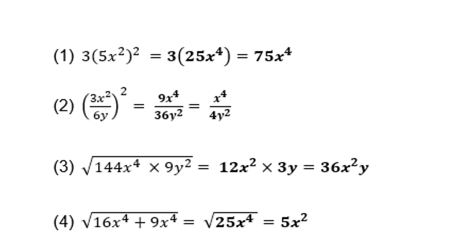For the square root of 144x to the power 4 times 9x squared, here you can find the square roots individually — that is allowed because you are multiplying. So it is 12x squared times 3y, which gives 36x squared y.